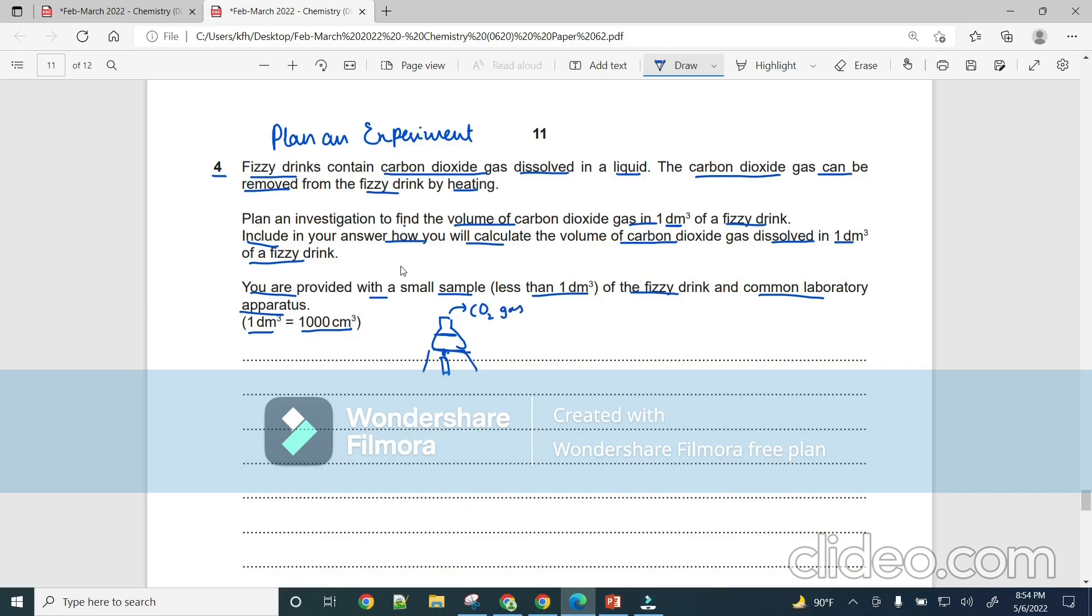So they are asking that we have less than 1 cubic decimetre of sample and they are asking us to find it for 1 cubic decimetre of fizzy drink. What we have to find is how much volume of carbon dioxide is given off for 1 cubic decimetre. So let us plan an experiment.